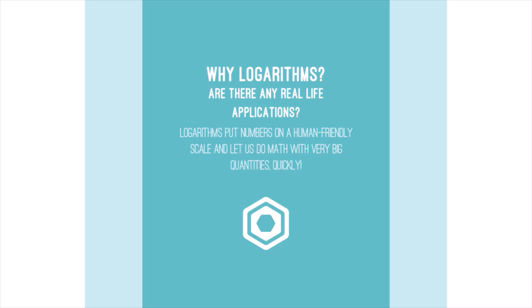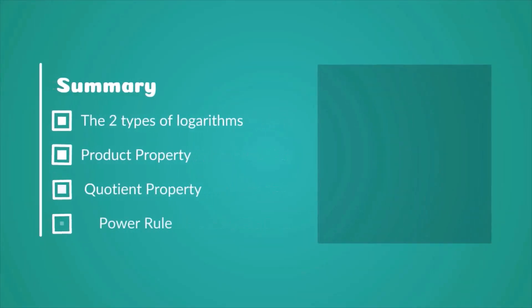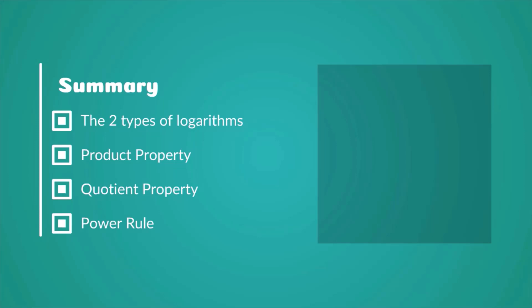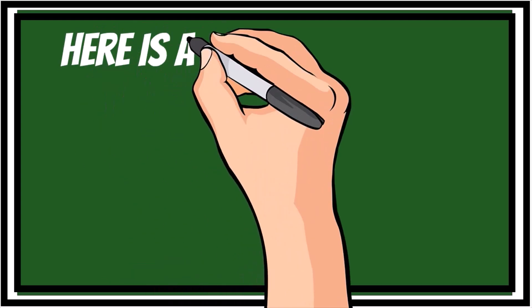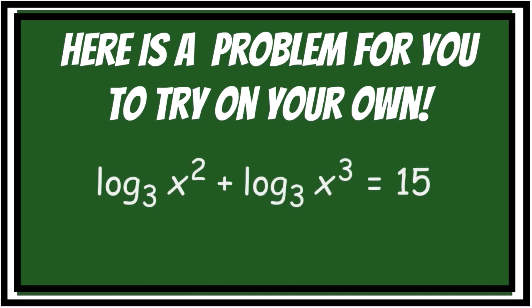Why logarithms? You might be wondering if there are any real-life applications — and there are. Logarithms put numbers on a human-friendly scale and let us do math very quickly with very large numbers. Here's a summary of what we learned: the two main types of logarithm problems, the product rule, the quotient rule, and the power rule. Here is a problem for you to try on your own: log base 3 of x² plus log base 3 of x³ is equal to 15. Find x.